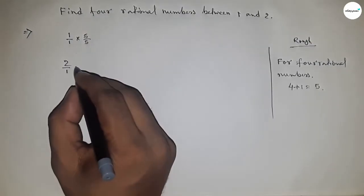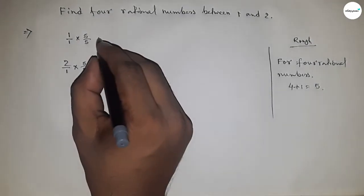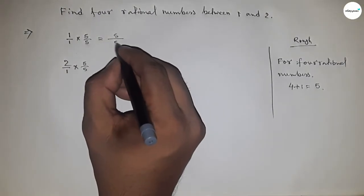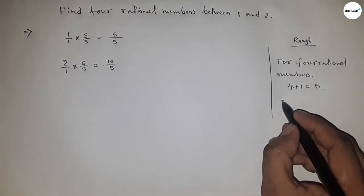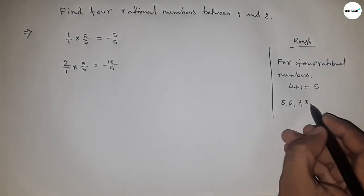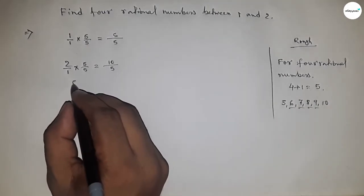Multiply by five upon five for both numbers. So this becomes five upon five, and this is ten upon five. Now between five and ten, we can get four numbers.